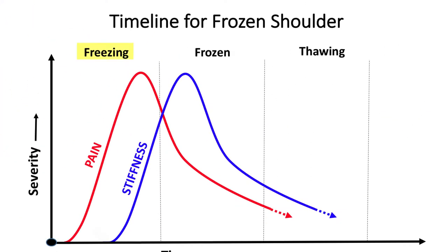Frozen shoulder typically develops in three stages. First is the freezing stage. In this stage, the patient feels the most pain and discomfort. As the pain worsens, the shoulder becomes more and more stiff with loss of range of motion. Secondly is the frozen stage. In the frozen stage, the pain actually reduces but the stiffness remains and the loss of mobility remains.